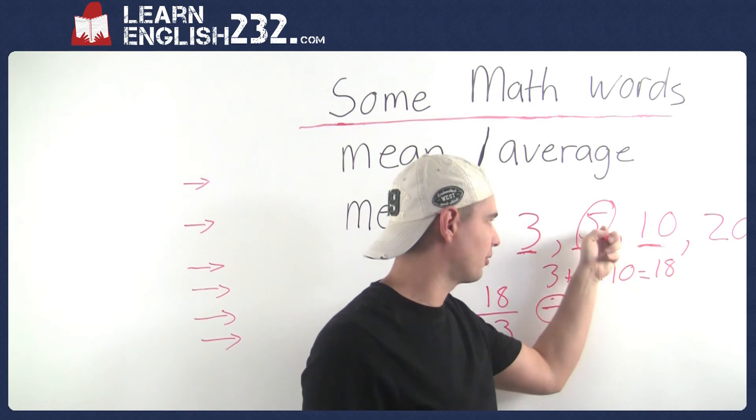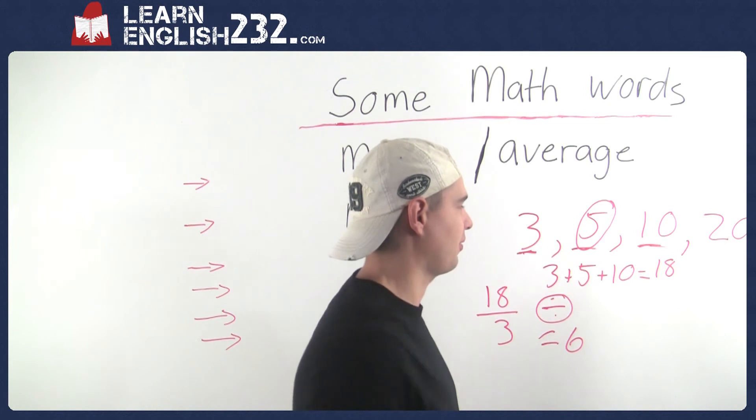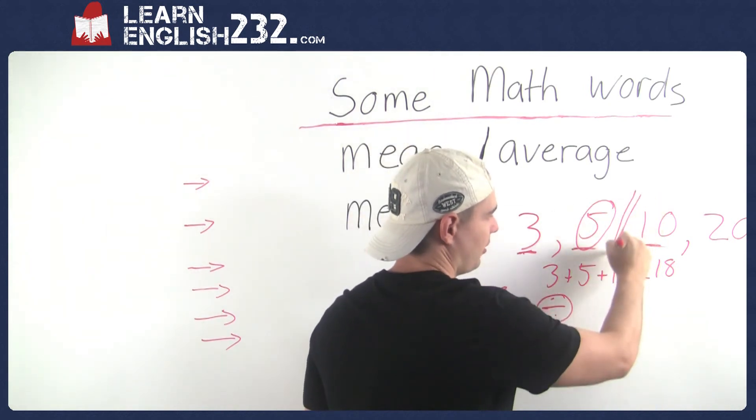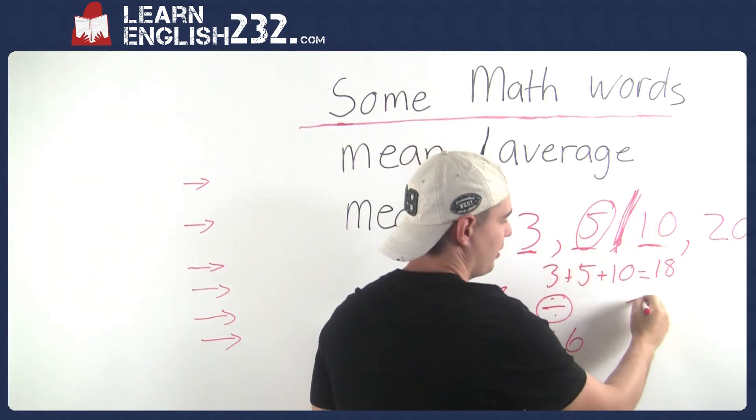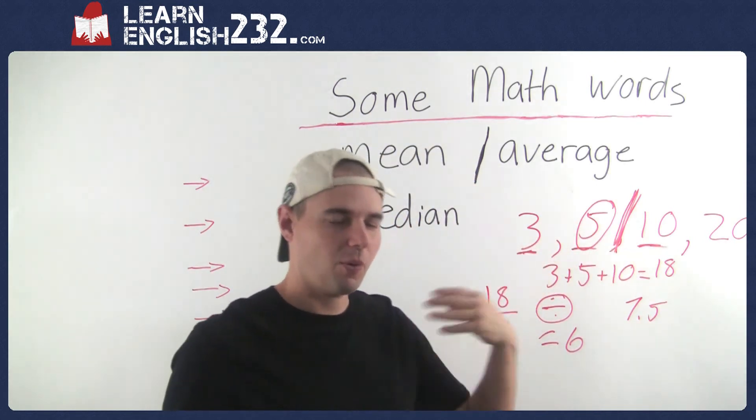So five plus ten is fifteen, divided by two, seven point five. So it's kind of in the middle of these two numbers. Seven point five, that's the median of these four numbers.